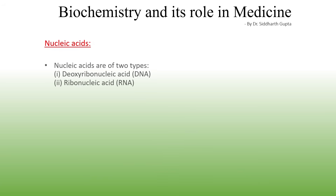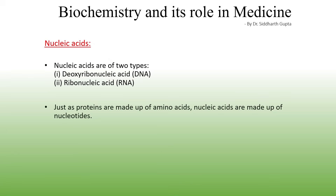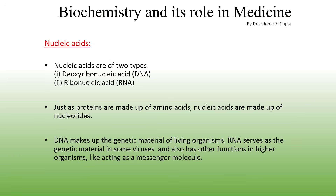Nucleic acids are of two types: DNA (deoxyribonucleic acid) and RNA (ribonucleic acid). Nucleic acids are polymers of nucleotides, just as proteins are polymers of amino acids. DNA's sole function is that it makes up the genetic material of living organisms. RNA serves as the genetic material in only a few viruses — for example, the HIV virus, influenza virus, dengue virus, and the COVID-19 virus. In higher organisms, RNA has other functions, such as serving as a messenger molecule.